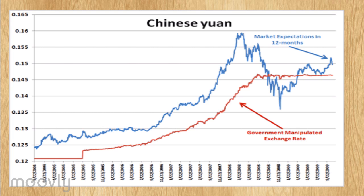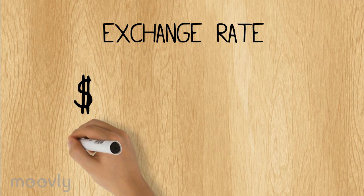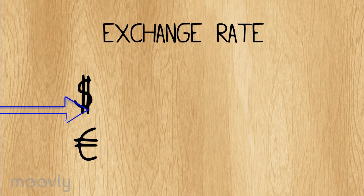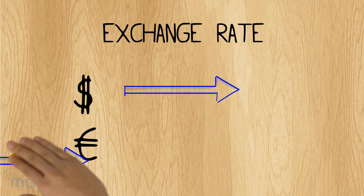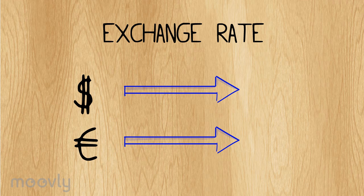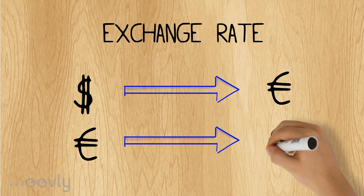As you may know, there are allegations that China is manipulating their currency by keeping it artificially low. Consequently, the exchange rates will be artificially kept low. So, what is an exchange rate? Well, it is the value of one currency expressed in terms of another currency.